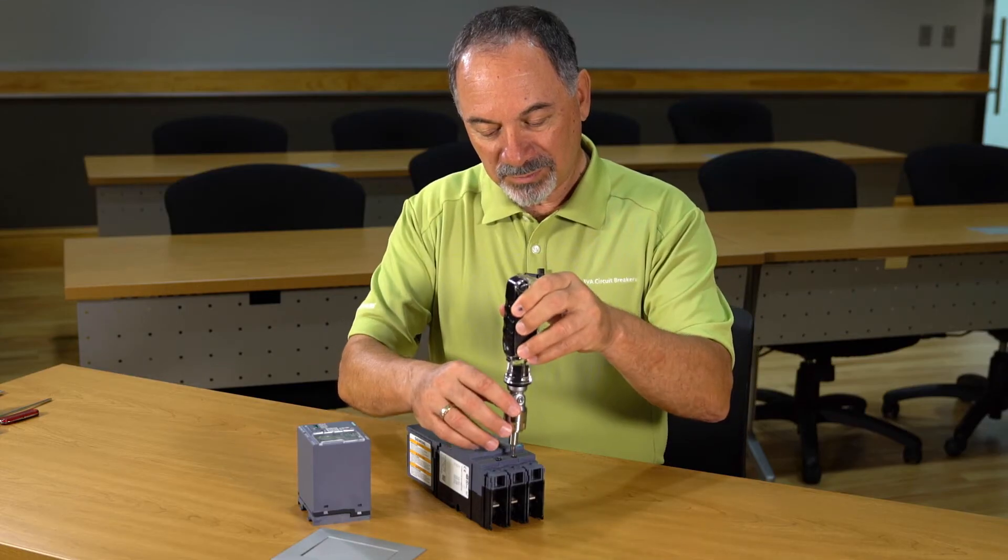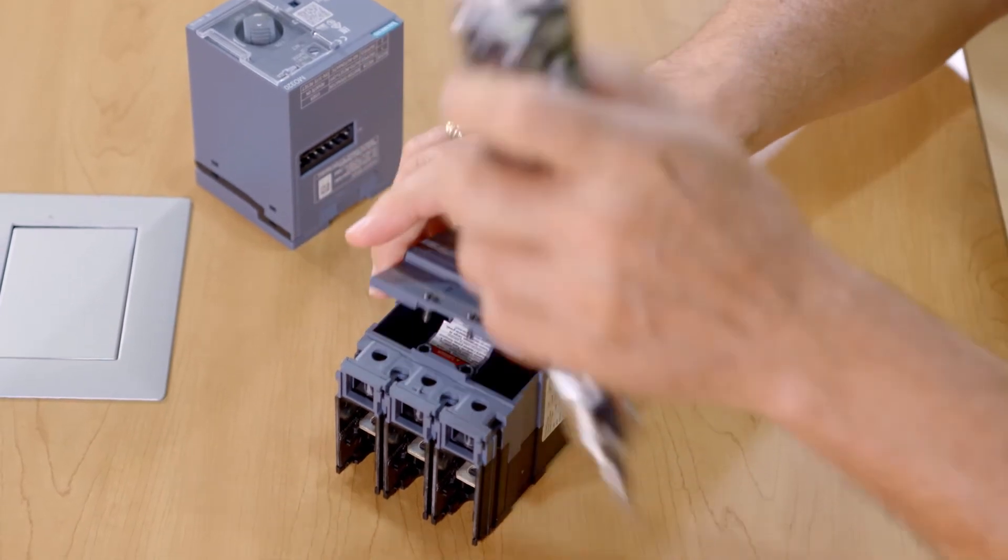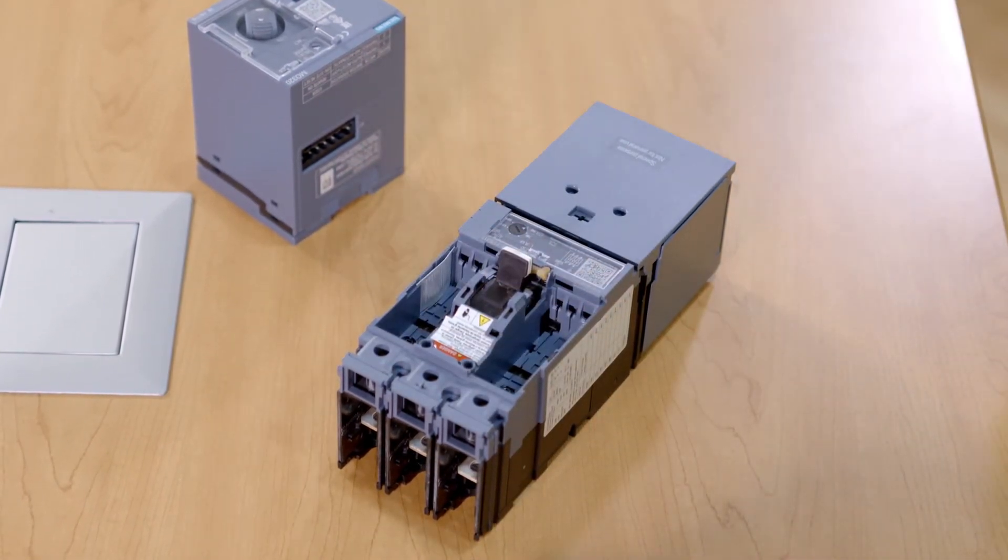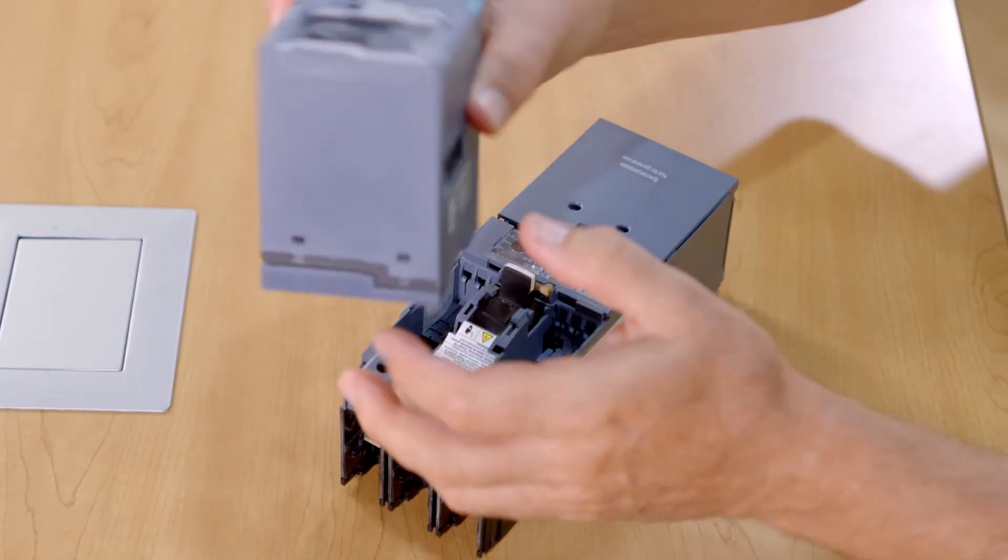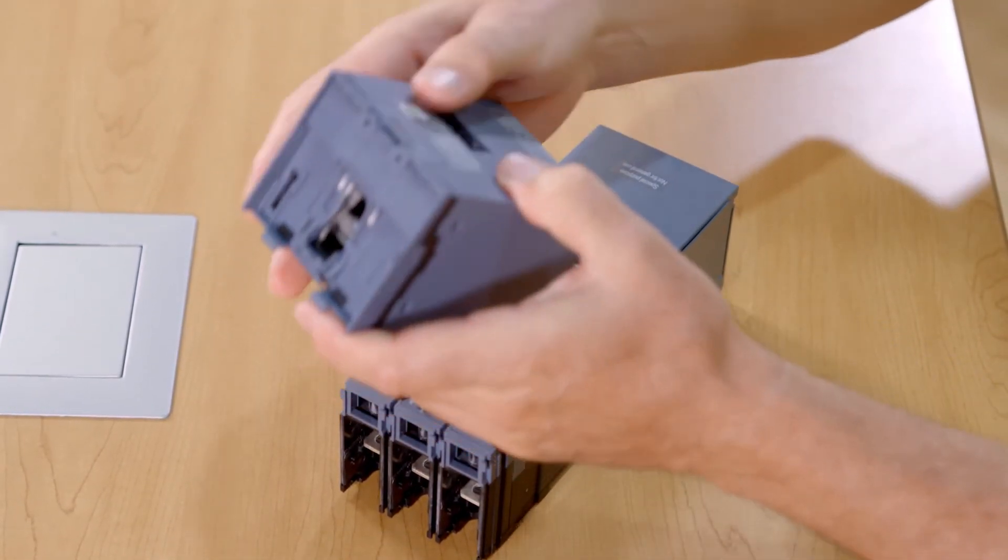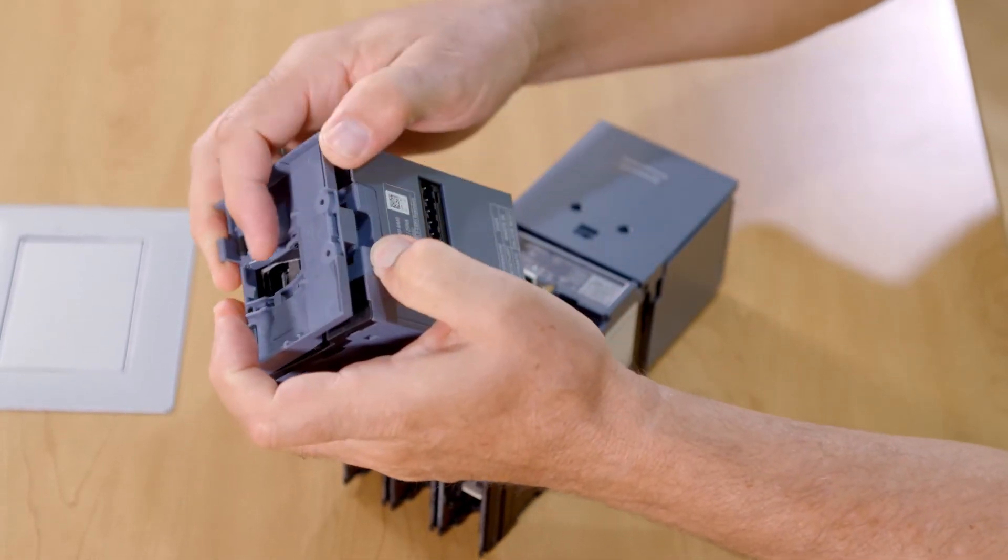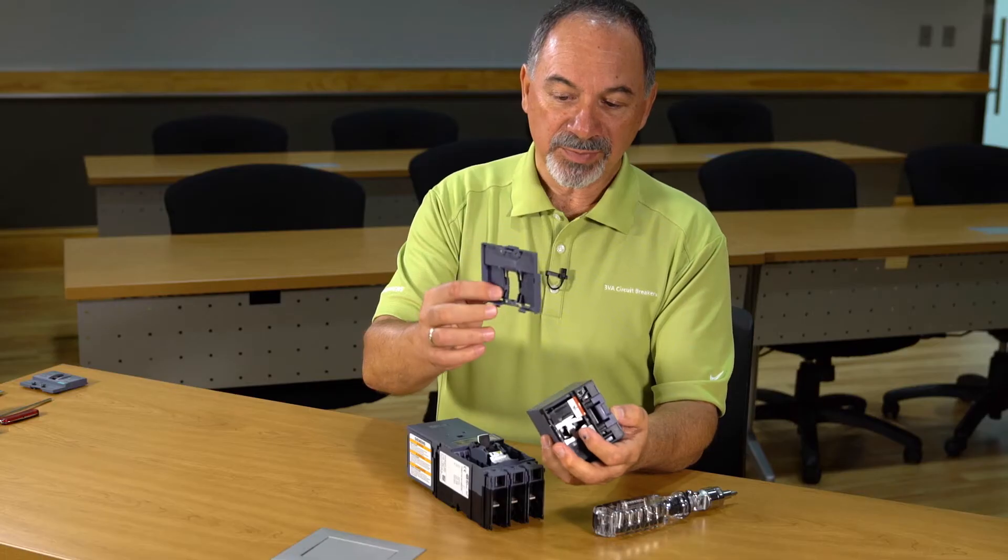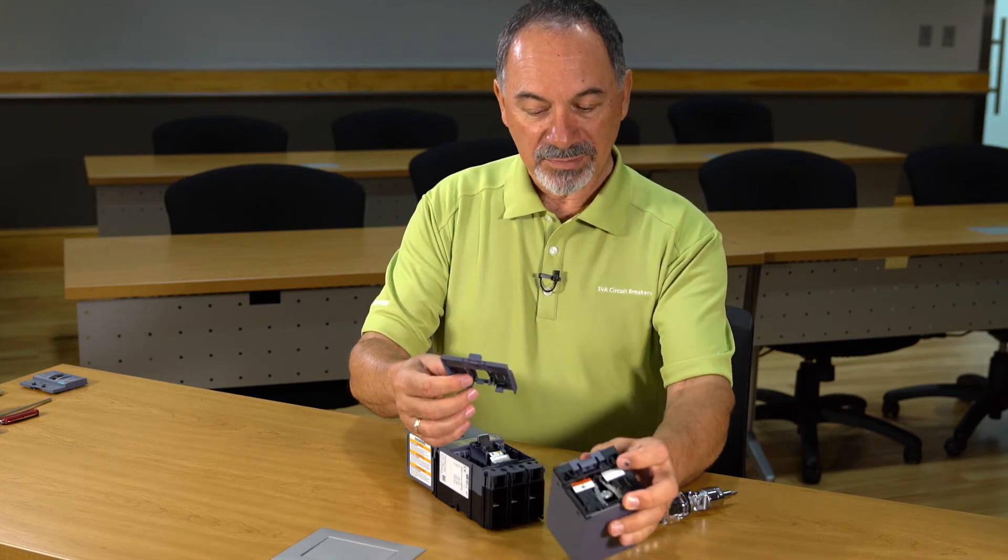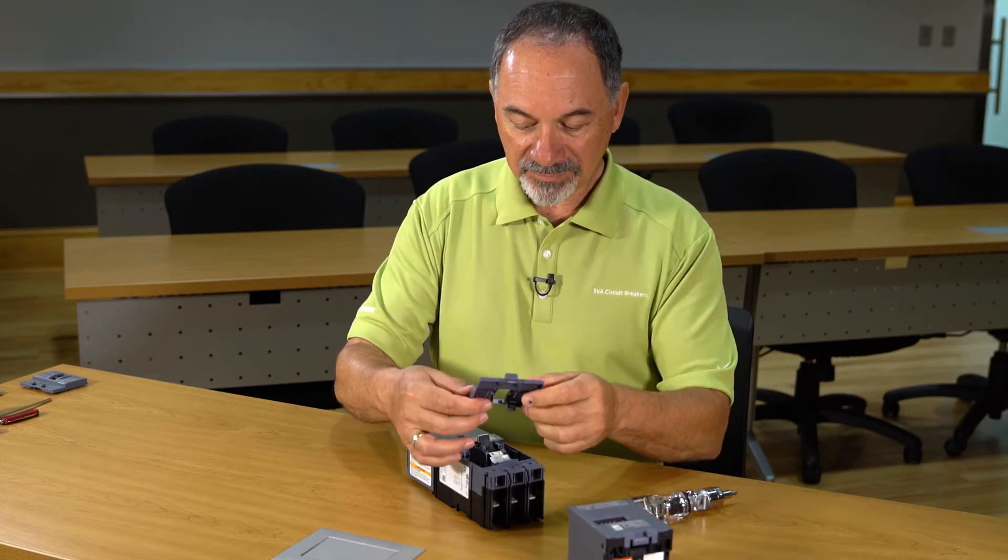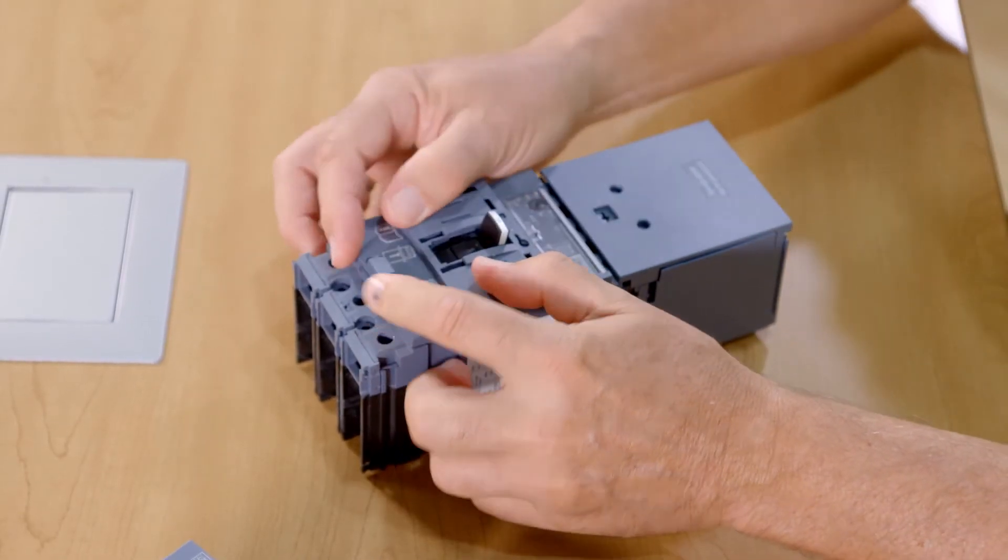First, we have to remove the accessory cover. When we have that removed, we set it aside. It will not be required for this operation. On the motor operator, we have a mounting base that is used to mount the motor operator to the breaker. This base essentially replaces the accessory cover, so when we have that in hand, we mount it very similar to the way the accessory cover was mounted.